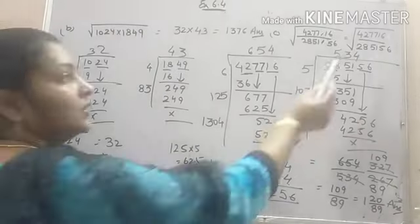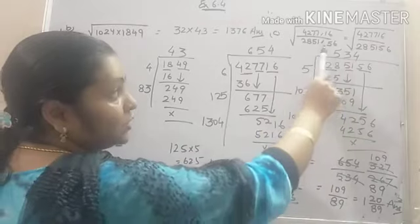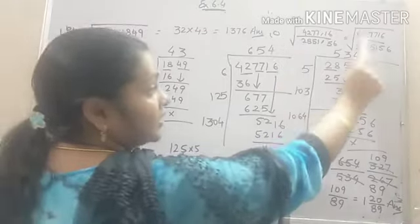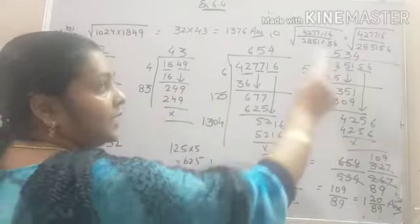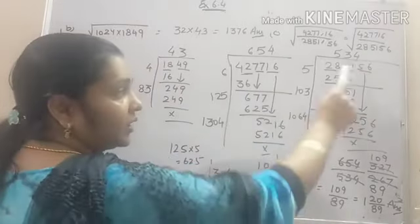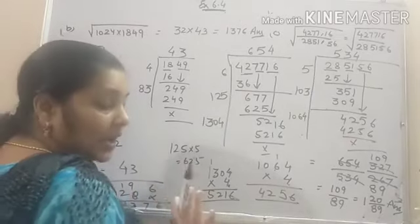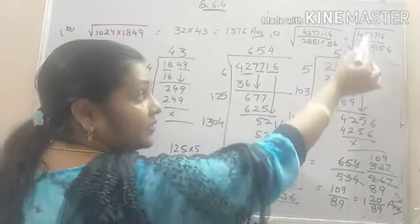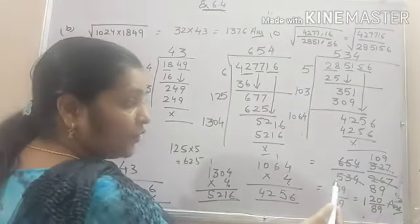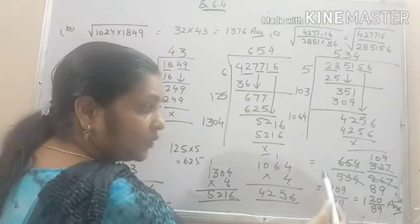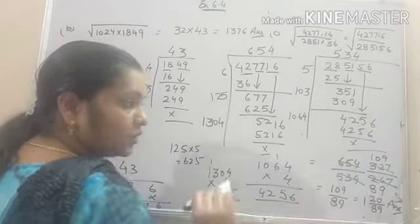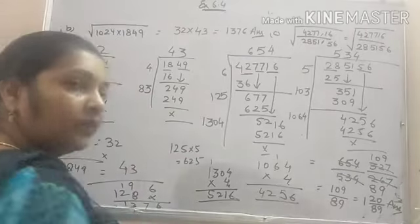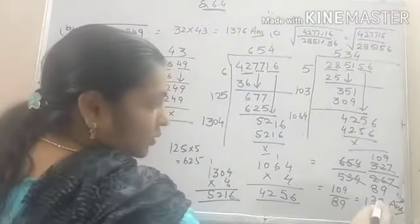So once again I am repeating. First of all we cancel the decimal sign. Because number of digits after the decimal are same. After that I found the root of this number which is equal to 654. Secondly I find the root of denominator which comes out to be 534. Now roots are there with us. So I will cancel the roots. Because we have to apply the division operation over there. So I will divide 654 by 534. That means I have to convert this fraction into lowest term. So our answer comes out to be 109 by 89.